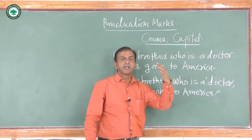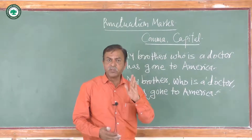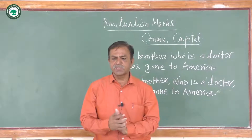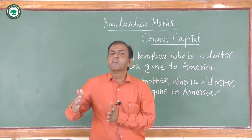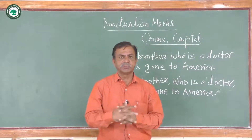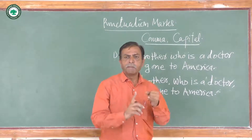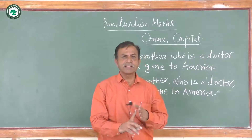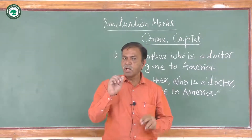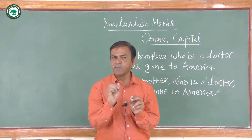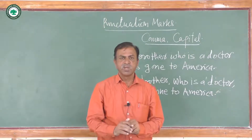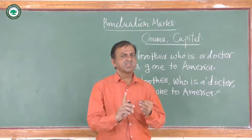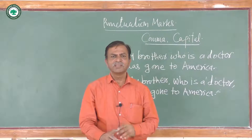Now this video is focused on the uses of comma and the uses of capital letters, or capitalization. The first use of comma is to separate words and word groups — that is, a series of three or more items related to the same group. For example: 'I bought pen, pencil, several books, and a compass from the stationery.' All of these things are related to the stationery, so after every item we give a comma.